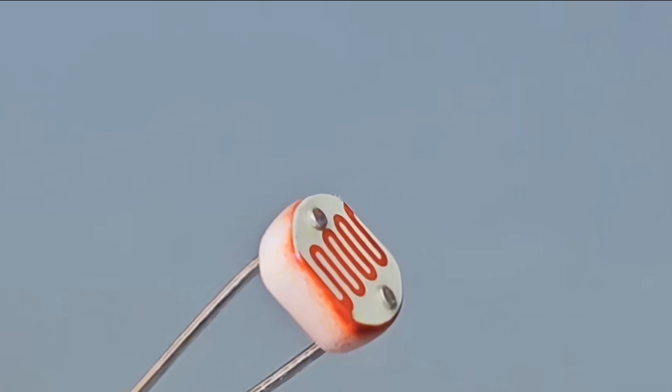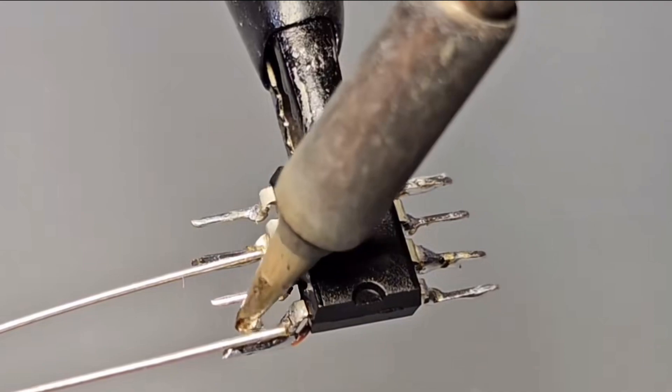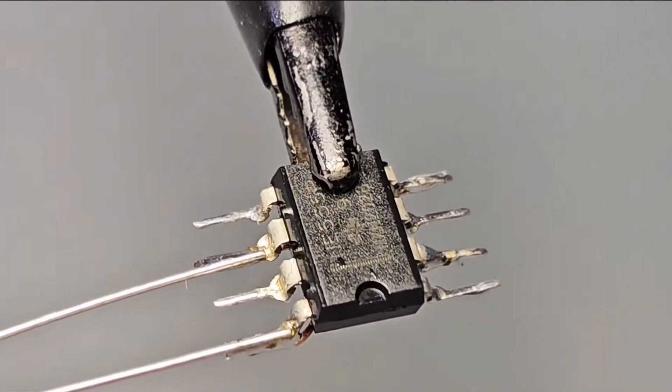Prepare a photoresistor. One end of the resistor is connected to the eighth pin, and the other end is connected to the sixth pin threshold terminal.